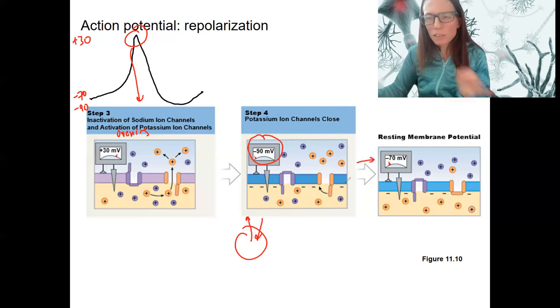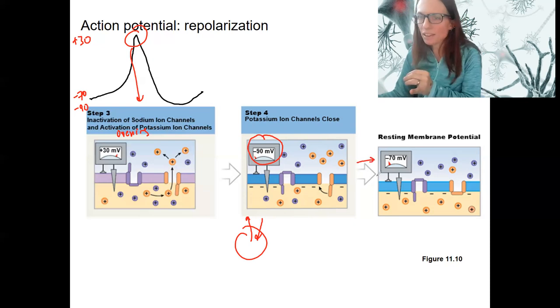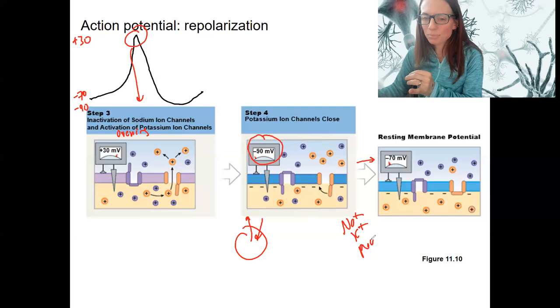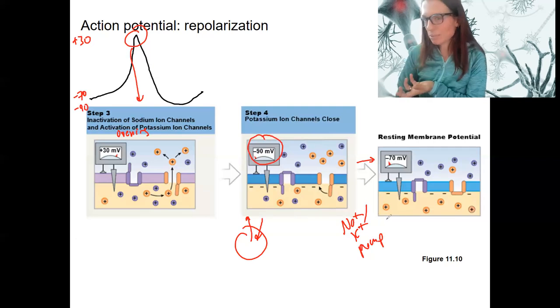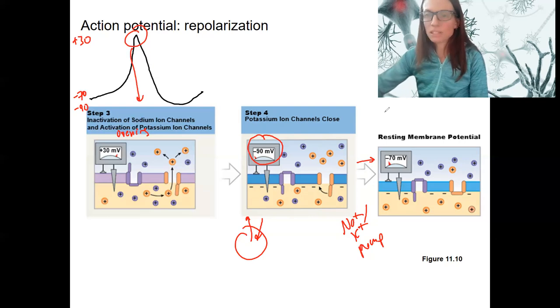Potassium channels close, and we slowly go back to rest. What causes this? How do we get from minus 90 to minus 70? Our sodium potassium pump is going to reestablish resting membrane potential from that slightly more negative. So that's the action potential.